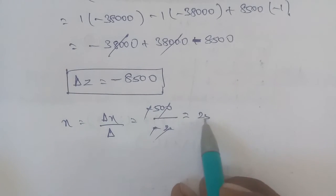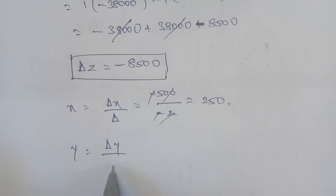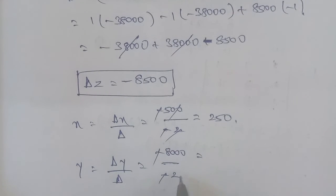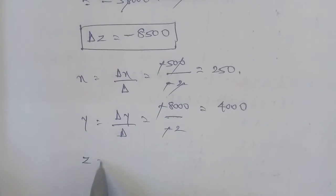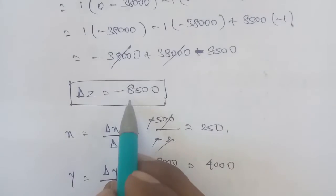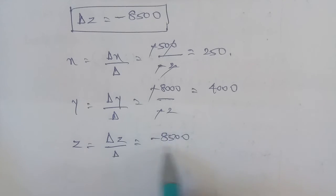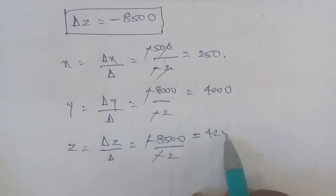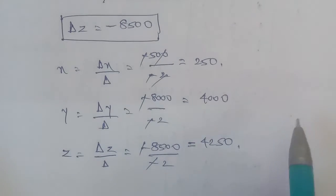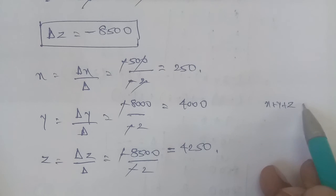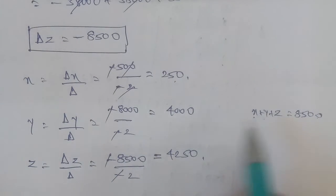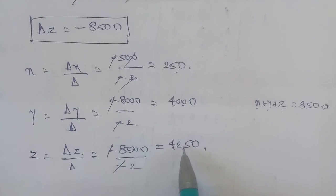Now the answers: x equals delta x divided by delta, which is minus 500 divided by minus 2, giving x equals 250. y equals delta y divided by delta, which is minus 8000 divided by minus 2, giving y equals 4000. z equals delta z divided by delta, which is minus 8500 divided by minus 2, giving z equals 4250.